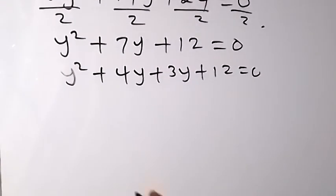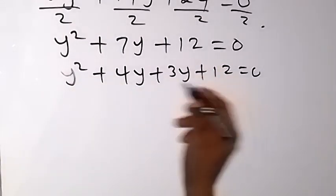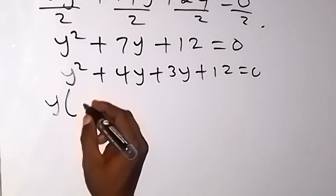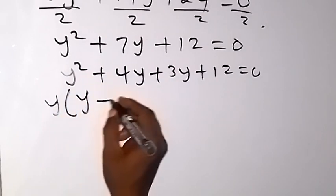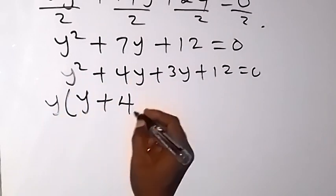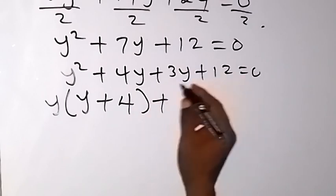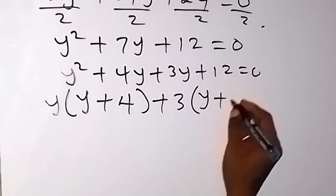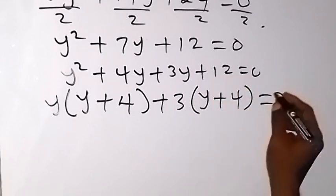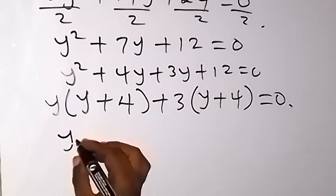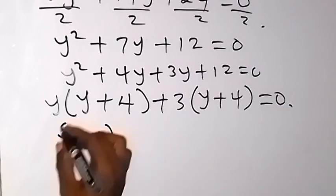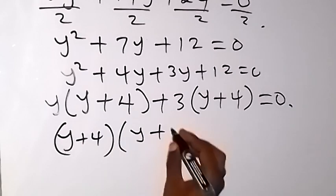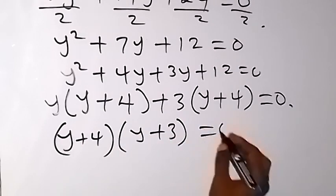When we group this in 2s, what is common between these two? We have y out, then y left here plus what is here is 4. Then plus, we have 3 common between these two. 3 out, we have y plus 4 left here. Then equals 0. So y plus 4 out, because it's common to the two. We have y left here, then we have 3 left here, equals 0.